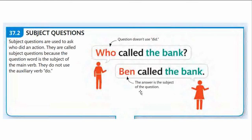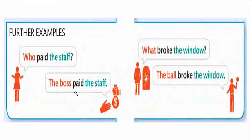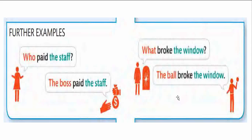The answer is the subject of the question. Let us see certain constructions: 'Who paid the staff?' — my purpose is to know who did this action. 'The boss paid the staff' — the boss did the action. 'What broke the window?' — I want to know what object did that action. 'The ball broke the window' — so the ball did that action.